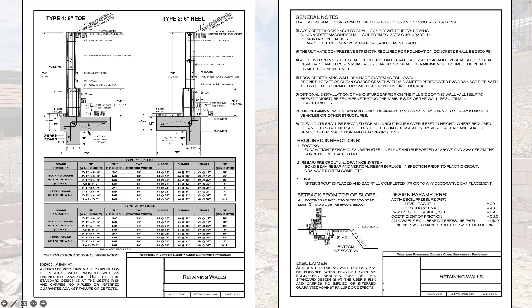There are two retaining wall details. The toe detail has the footing embedded into the fill side of the hill. The heel option is basically the opposite — the footing kicks back and goes out the other way. We did the heel option because we didn't want to cut more into the slope. However, a downside of the heel option is that landscaping is limited: right above the concrete footing you'll only have about four to six inches of fill, so you can't do much planting near those retaining walls. Keep that in mind if you want trees or planting next to your walls.